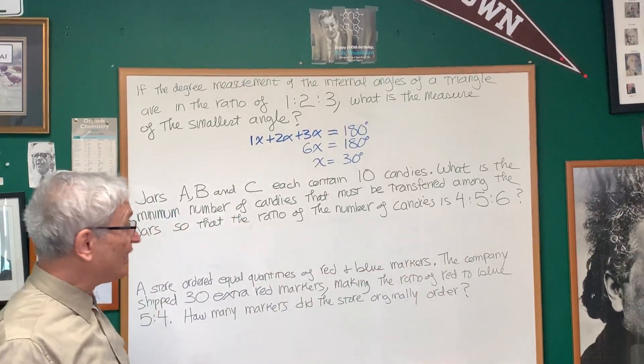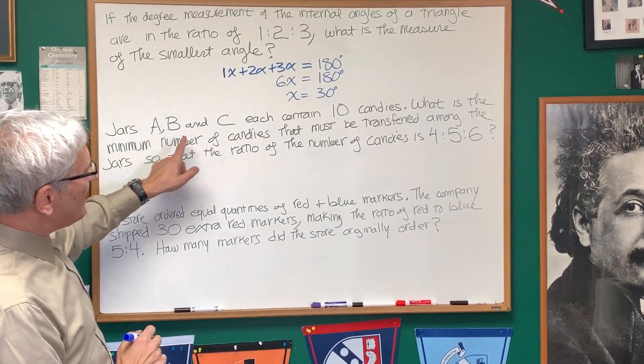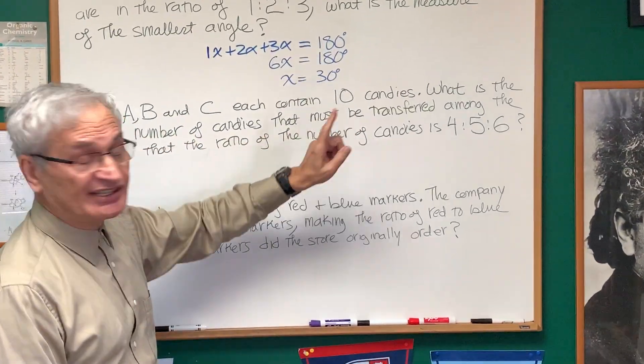Okay, now we go to the next one. Very similar, but a little tricky. Jars A, B, and C each contain 10 candies.